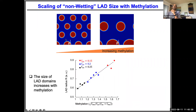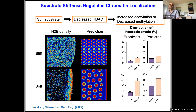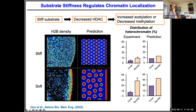If you have non-wetting domains and increase methylation, the wetting angle is preserved but the size of the domains changes. For fully wetted domains, increasing methylation increases the thickness of those lamina-associated domains. In the soft case you have bigger, sparser interior domains and a thicker lamina-associated layer; in the stiff case domains are smaller and more compact. The model clearly explains this data. The methylation levels are certainly different between soft and stiff, and that changes the domain sizes.